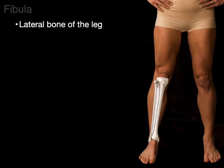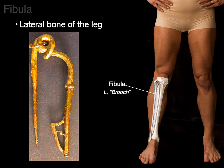The lateral bone of the leg is called the fibula. Fibula is Latin for broach because it kind of looks like the supporting pin on an old-fashioned broach. We also see the word peroneus, which is Greek for broach. Whenever we talk about the fibula, you'll hear both terms — fibularis longus or peroneus longus, common fibular nerve or common peroneal nerve. They're basically saying the same thing: one's using Latin, one's using Greek.